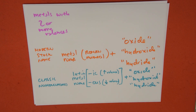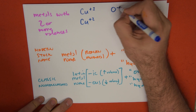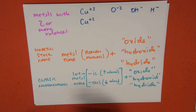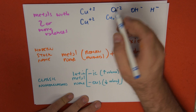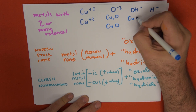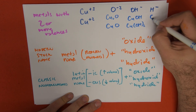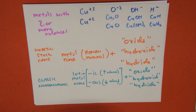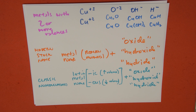Let's do some specific examples. Copper can be plus 1 or plus 2, and we mix it with O²⁻, OH⁻, or H⁻, giving us six possible compounds: Cu₂O, CuO, CuOH, Cu(OH)₂, CuH, and CuH₂. Both sets of compounds have the same naming style, but we use the valence to separate which is which.